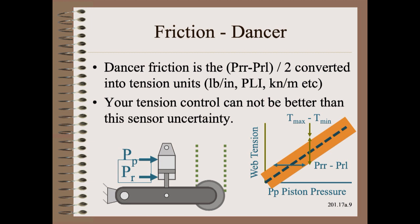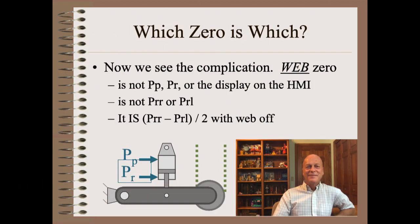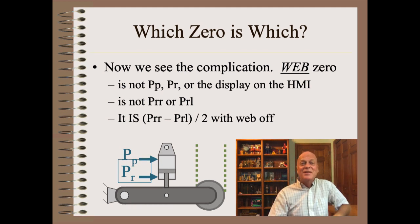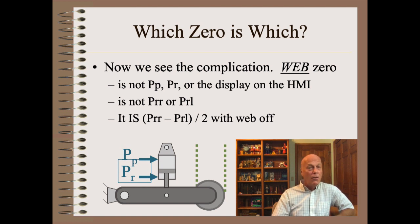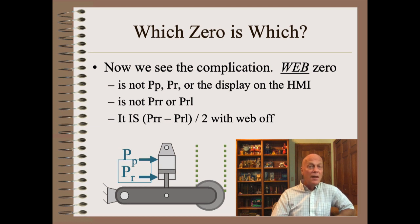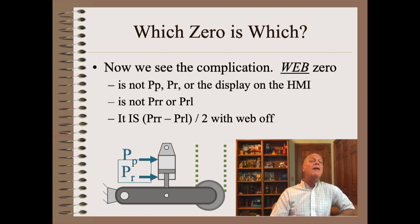That is, no matter how perfectly you control cylinder pressure, you cannot know nor control tension better than that band. Zero in web handling is not zero piston pressure, zero rod pressure, or necessarily the zero on the HMI. Zero is also not the raise or lower rod pressure. What zero in web handling is, is the average of the pressures required to just raise and just lower the dancer with the web off.